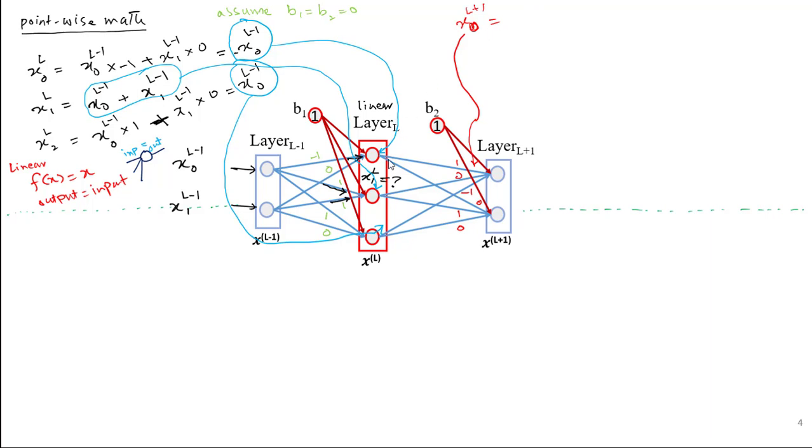Let's compute the activations at L plus 1. For the first unit when we do the math, which is very straightforward, we get minus 2 times X0 L minus 1. Similarly we can do the math for the second unit of layer L plus 1, and it results in, because two of the incoming weights are 0, so only the second neuron output in layer L will be the accumulated input over here.